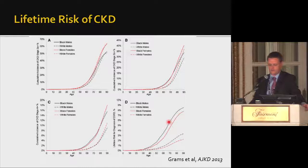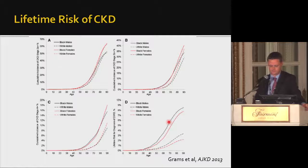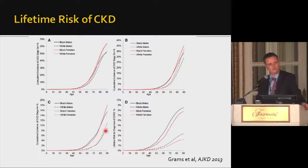The lifetime risk of CKD stages 3a, 3b, 4, and end-stage renal disease were estimated at 60%, 35%, 11%, and 3.6%, respectively. About three in five people, if they live long enough, will develop CKD. The vast majority is driven by the over-70 population, where CKD prevalence exceeds 50%. Risk increases exponentially, with incidence really taking off after age 60 in all categories.